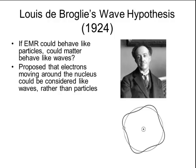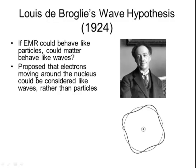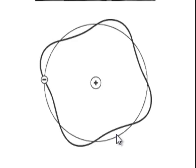He proposed that electrons moving around the nucleus could be considered like waves rather than particles. So you'll notice in this diagram in the lower right-hand corner, this circle on the outside represents the orbit proposed by Bohr's model, and this darker black line represents the electron traveling around that orbit, where it moved much like a wave rather than following a smooth circular path as Bohr had proposed.